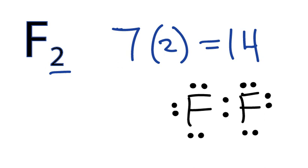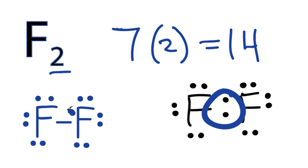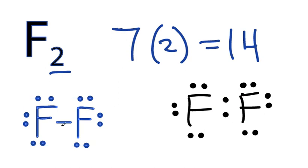We could write it, though, like a structural formula, and that would look like this right here, where this bond is represented by a single line. So that single line is a pair of electrons bonding the two F's together, and then the rest of the electrons are valence electrons around the Fluorine atom.